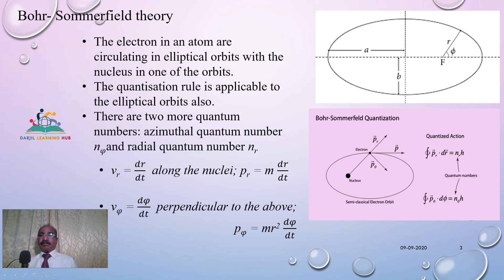According to Sommerfield, he gave the theory like this: The electrons in an atom are circulating in elliptical orbits with the nucleus in one of the foci. Then he proposed that the quantization rule in the orbital angular momentum is quantized, energy is quantized. This will hold true for this model also.